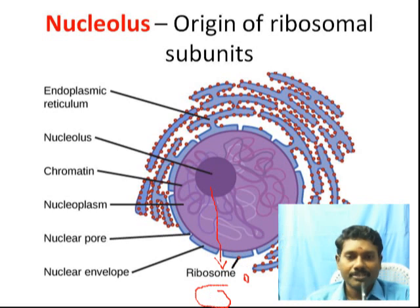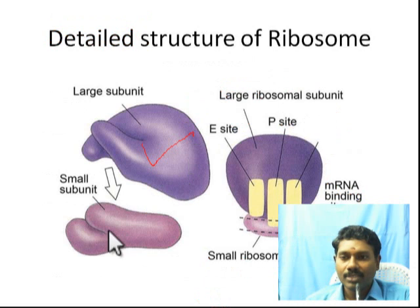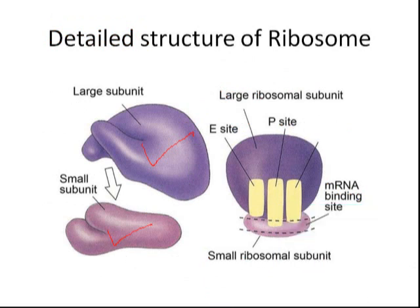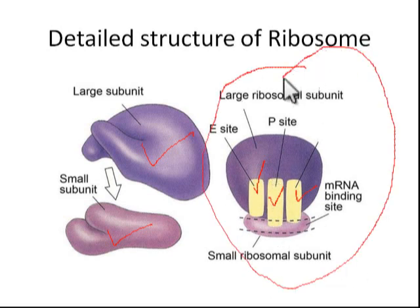Here, you can see the detailed structure of the ribosome — the larger subunit as well as the smaller subunit. Let's talk about the sites. This is the A-site, this is the P-site, and the last is the E-site. So there are three sites, and when the two subunits join, protein synthesis is carried on.